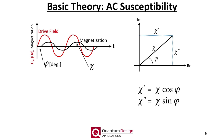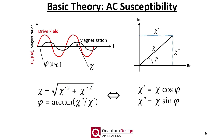One can interpret the real component as corresponding to the in-phase response of the magnetic moment relative to the AC drive field, and the imaginary component as the quadrature or out-of-phase response. The imaginary component is typically related to damping and energy loss mechanisms within the sample. Note, the ACMS2 actually directly measures the real and imaginary components, from which the amplitude and phase are then calculated.